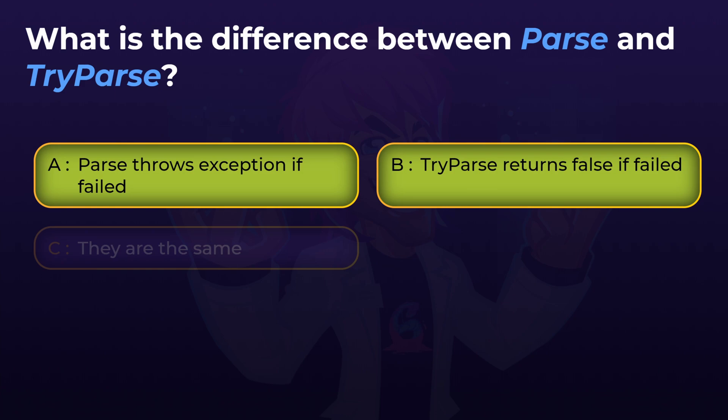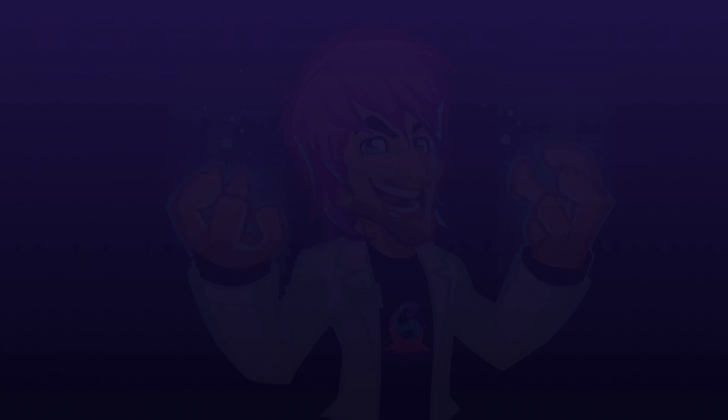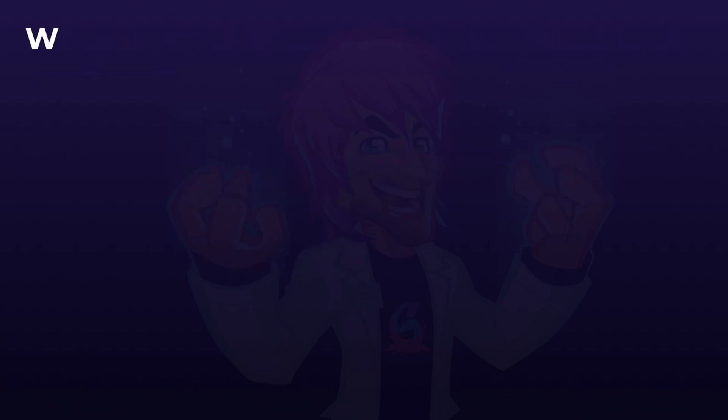Parse and try parse are certainly not the same — they have completely different code and handle outcomes differently. Try parse is more efficient than parse, because it doesn't have to throw an exception, which is a costly operation that can slow down your program. Hopefully you're all doing okay and getting at least 50 to 80% right.